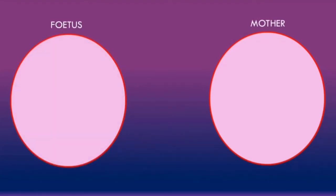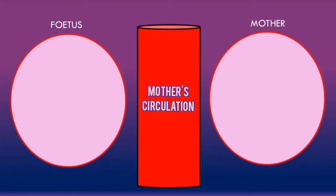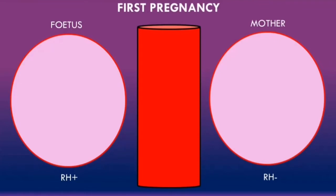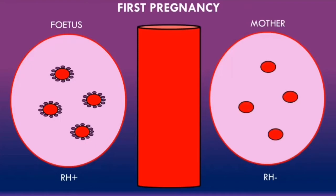Let's discuss the pathophysiology of hemolytic disease of the newborn due to rhesus incompatibility. Here, this circle represents the mother and this circle represents the fetus, and here we have the mother's circulation. Hemolytic disease of the newborn occurs when the mother is rhesus negative and the fetus is rhesus positive. We will assume this is the mother's first pregnancy. As the fetus is rhesus positive, the red blood cells of the fetus will have the rhesus D antigens on the surface, while the mother's red blood cells will not.